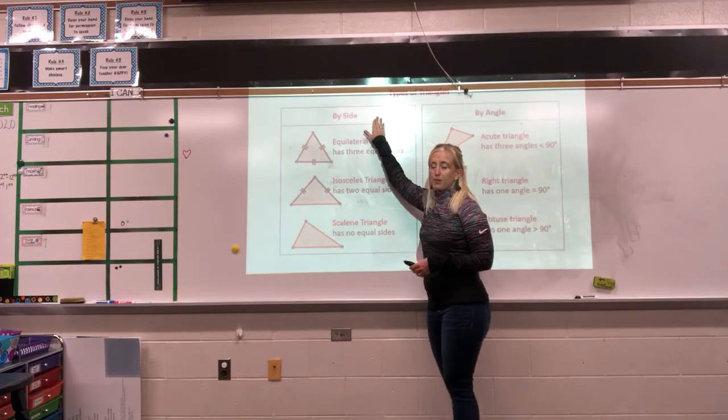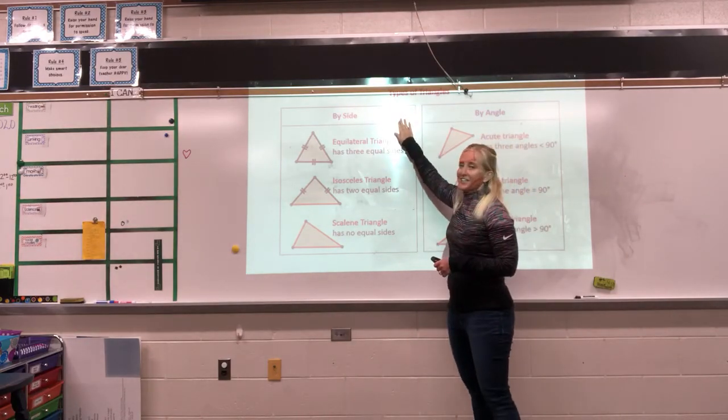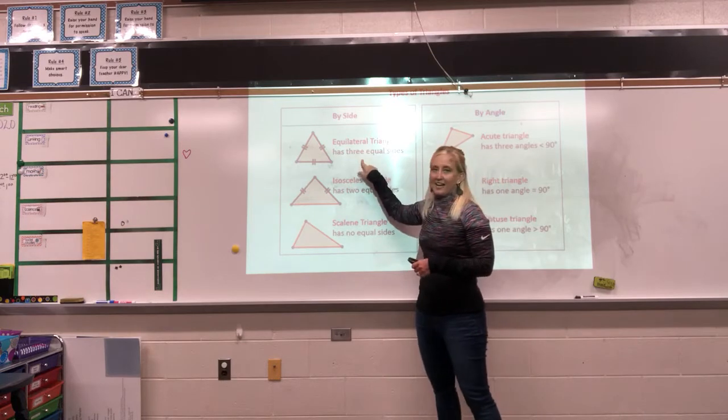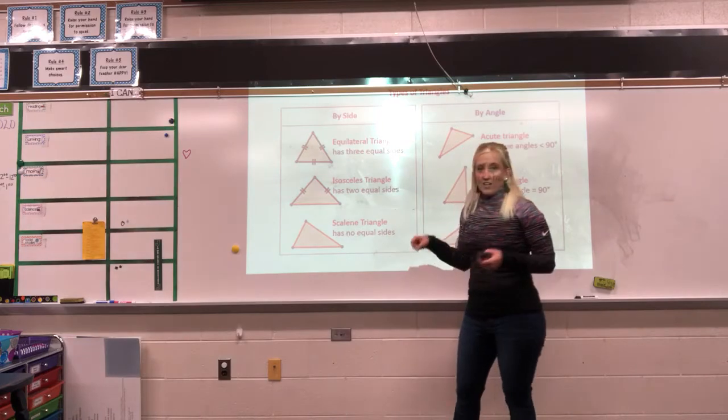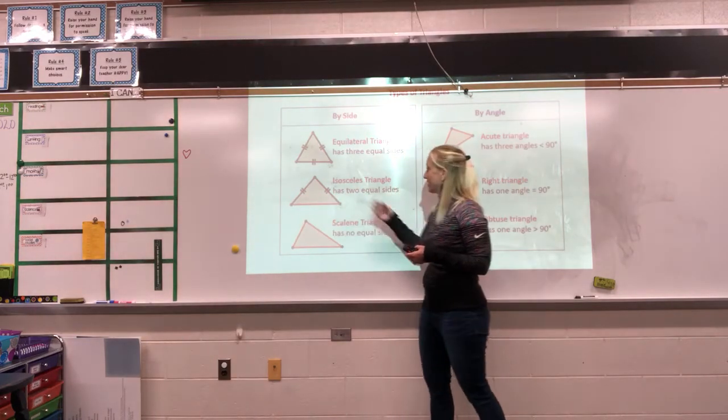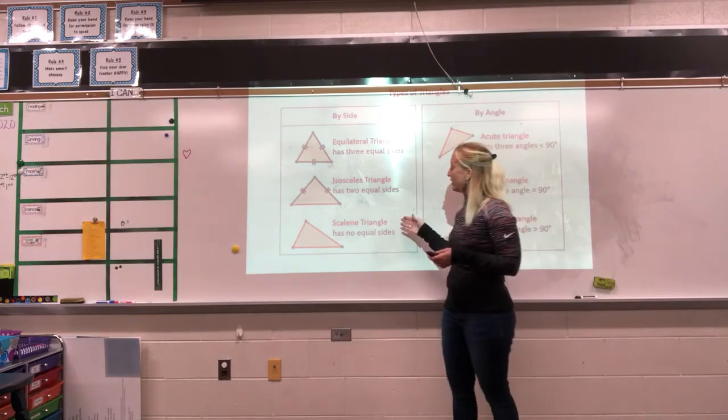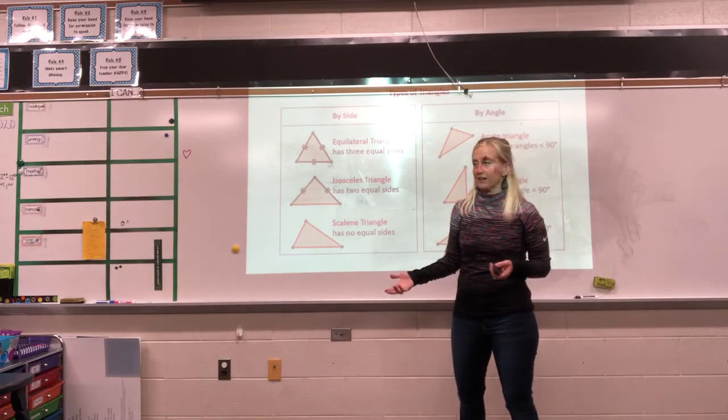We can do it by their sides. Triangles always have three sides. But if we look at the sides and all three sides are the same length, we call it an equilateral triangle. If a triangle has two sides that are equal length, we call it an isosceles. And if a triangle has no equal sides in the same length, that's a scalene triangle.